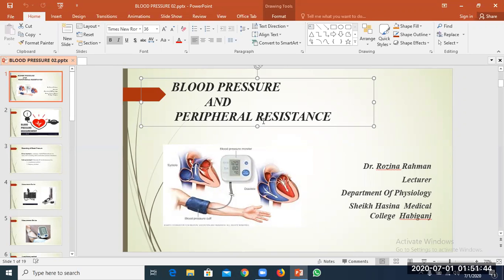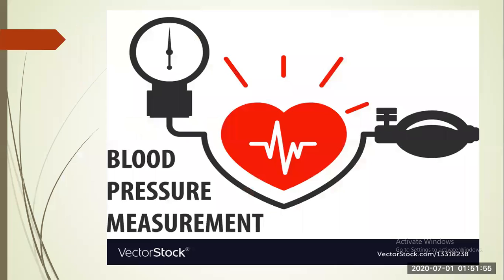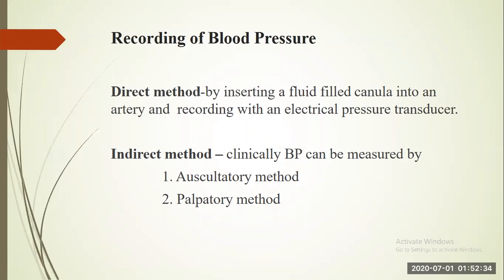Welcome students to our second class on blood pressure and peripheral resistance. Today we will start with blood pressure measurement. In the previous class, we had already discussed what blood pressure is, the types of blood pressure — systolic arterial pressure, diastolic pressure, pulse pressure, mean arterial pressure — the physiological factors that affect blood pressure, and what is peripheral resistance.